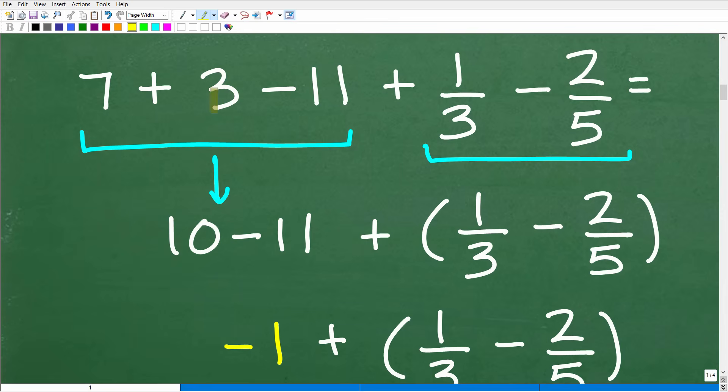Here we have seven plus three minus 11. Seven plus three is 10. 10 minus 11 is negative one. You're going to need to know some positive and negative number rules in order to do this problem. So 10 minus 11 is the same thing as 10 plus negative 11, which of course is negative one.